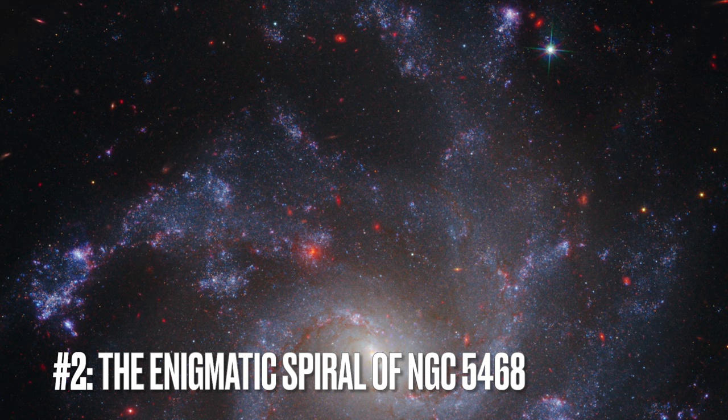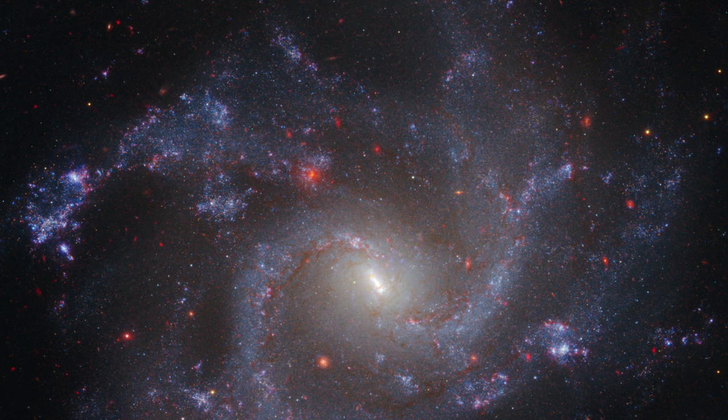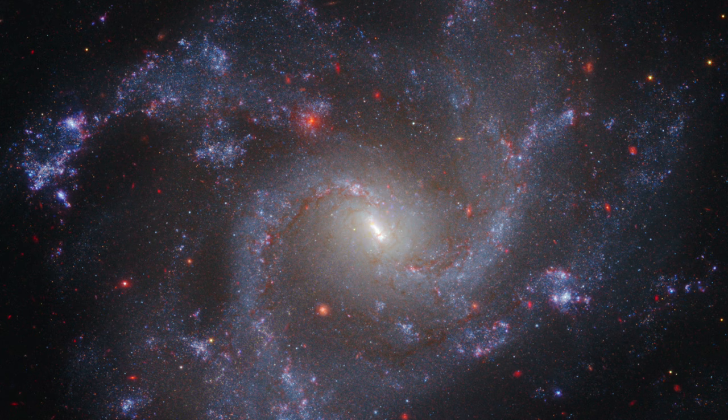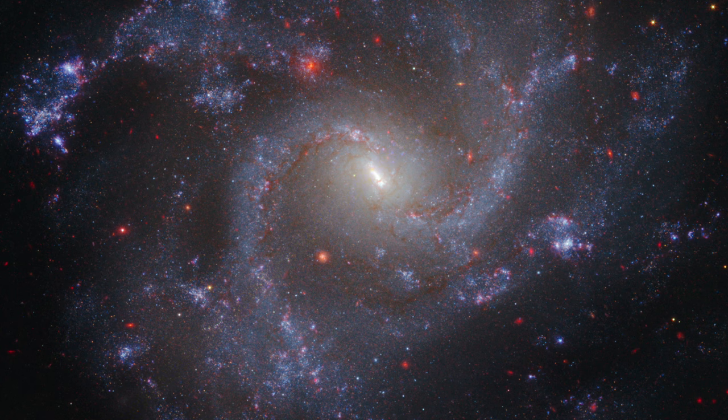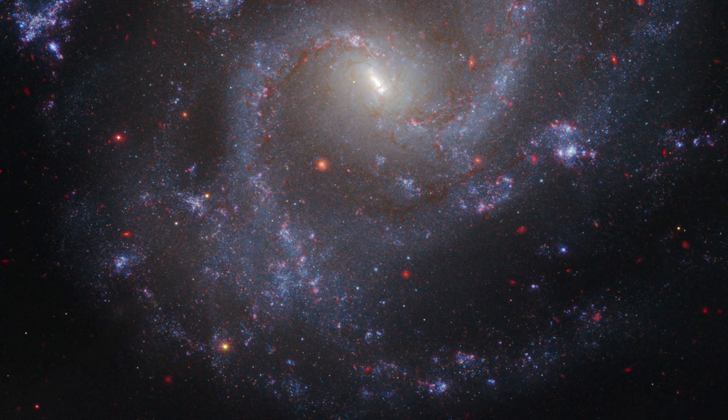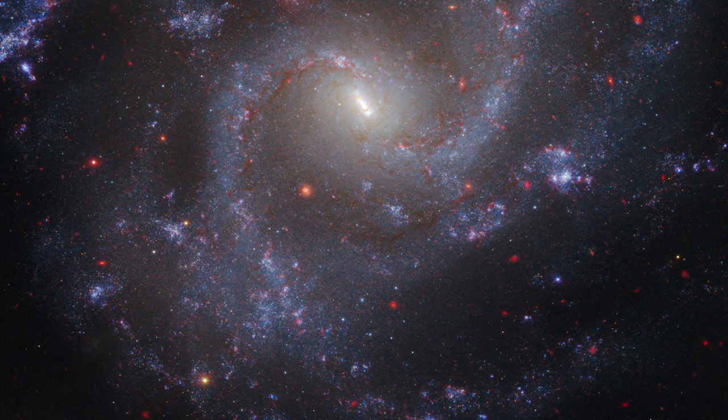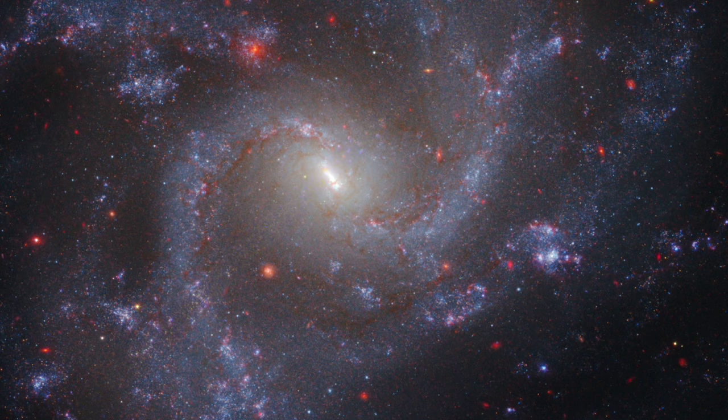Number 2. The Enigmatic Spiral of NGC 5468. Located in the constellation of Virgo, the spiral galaxy NGC 5468 presents a fascinating chapter in the exploration of our universe. This galaxy, situated about 130 million light-years away from Earth, captures the attention of astronomers for a very special reason. Through the combined observations from the James Webb Space Telescope and its predecessor, Hubble, NGC 5468 serves as a critical marker in our quest to comprehend the universe's expansion.